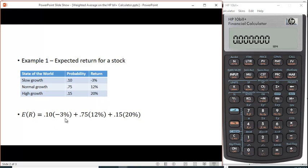So this is how you do the calculation: 10% times minus 3% plus 0.75 times 12% plus 0.15 times 20%. You can also use the financial calculator here.